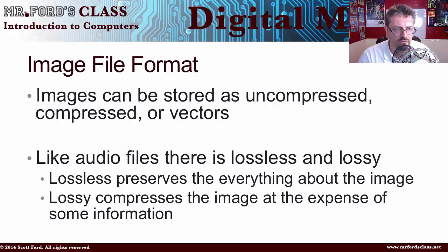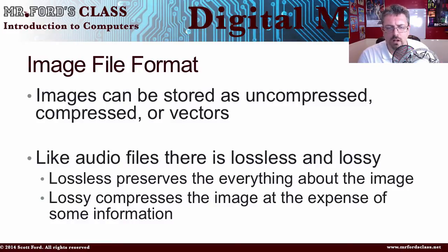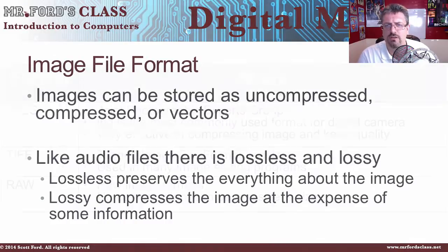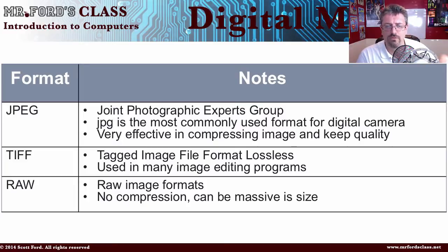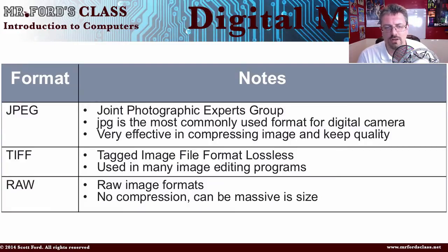Image file formats - just like with audio file formats, we have different ways to store image files. We have lossless, which is the full image with no compression, and lossy compression, which involves a loss of some quality. We also have vectors, which store images as mathematical formulas, as opposed to a bitmap which you can't scale. JPEG is probably one of the more common ways to store image files. It is very effective at compressing images - in fact, you really shouldn't try to additionally compress a JPEG, because the JPEG compression is so efficient that zipping it could actually make the file bigger.